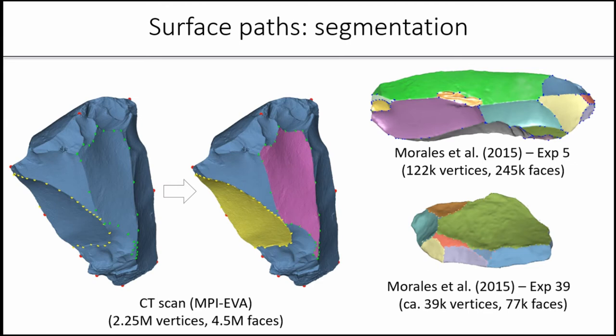This is a very high resolution scan containing about 2.3 million vertices and 4.5 million faces. In this kind of scan, the protocol works quite well, but it also works quite well on lower resolution scans. These are from the dataset published by Morales et al. in 2015.